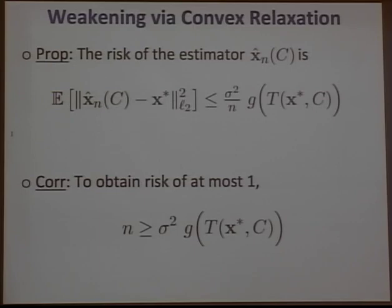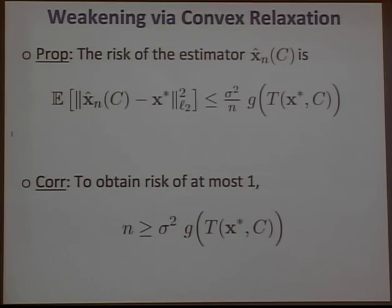Going back to the philosophy from the beginning: if you fix the desired risk to be, say, one, then the number of samples needed is lower bounded by sigma squared times the Gaussian complexity of the cone. If n is greater than this quantity, you're guaranteed an estimator with risk at most one.